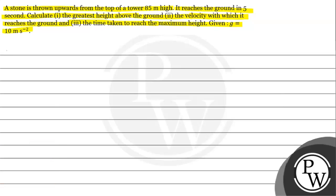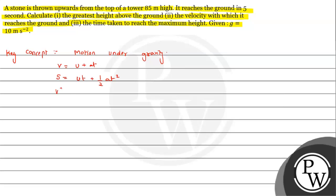The key concept we need to understand is motion under gravity. Motion under gravity is a case of uniform acceleration in the downward direction, so we can make use of the equations of motion: first equation v = u + at, second equation s = ut + ½at², and third v² = u² + 2as.